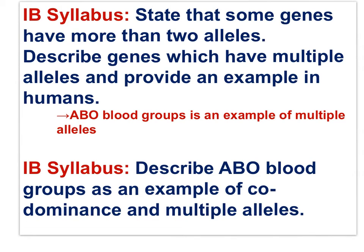Here is the relevant IB syllabus statement: state that some genes have more than two alleles, and describe genes which have multiple alleles providing an example in humans. The ABO blood groups provide an example of multiple alleles, but also of codominance and the dominant recessive heredity pattern.